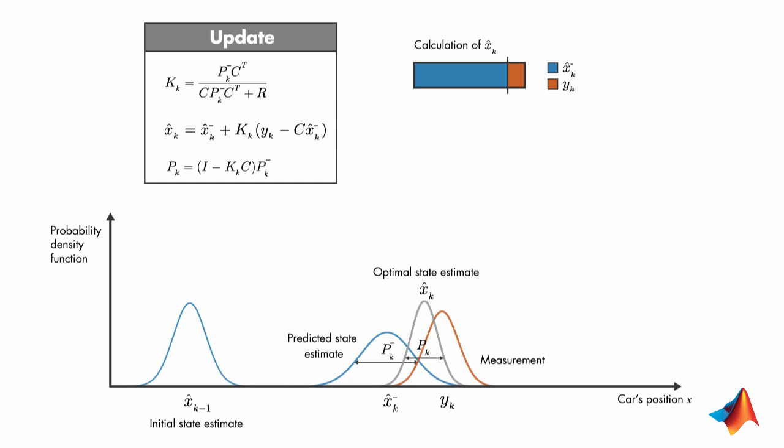We can also show this mathematically by looking at two extreme cases. Assume that, in the first case, the measurement covariance is 0. To calculate the Kalman gain, we take its limit as R goes to 0. We plug in 0 for R and see that these two terms cancel each other out. As R goes to 0, the Kalman gain approaches to the inverse of C, which is equal to 1 in our system.